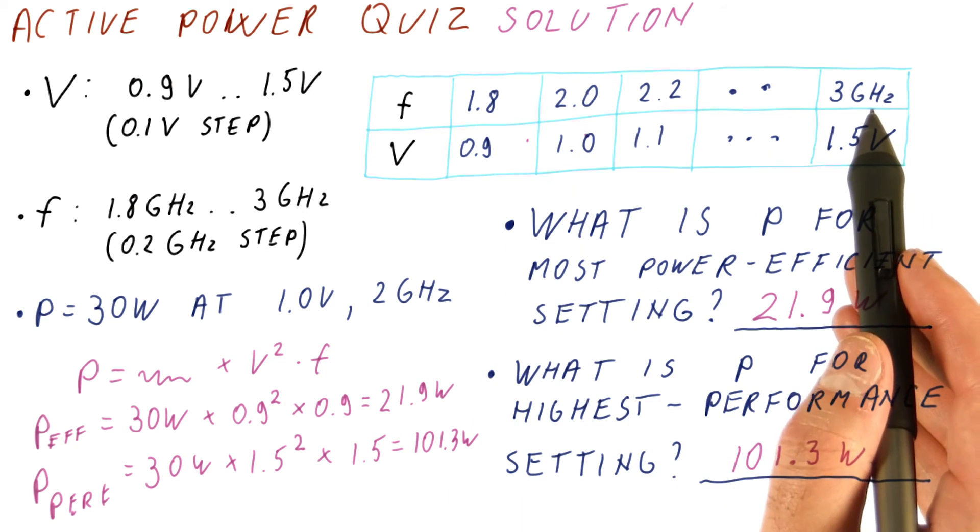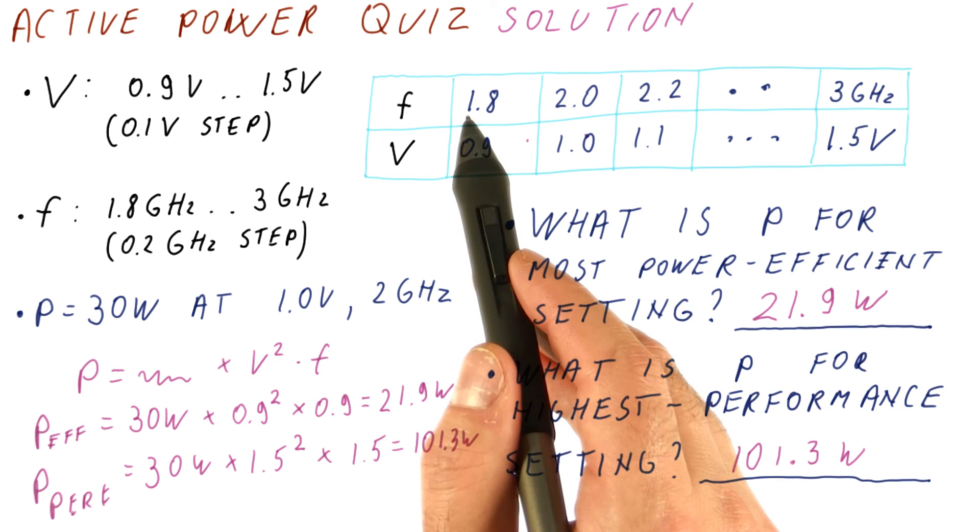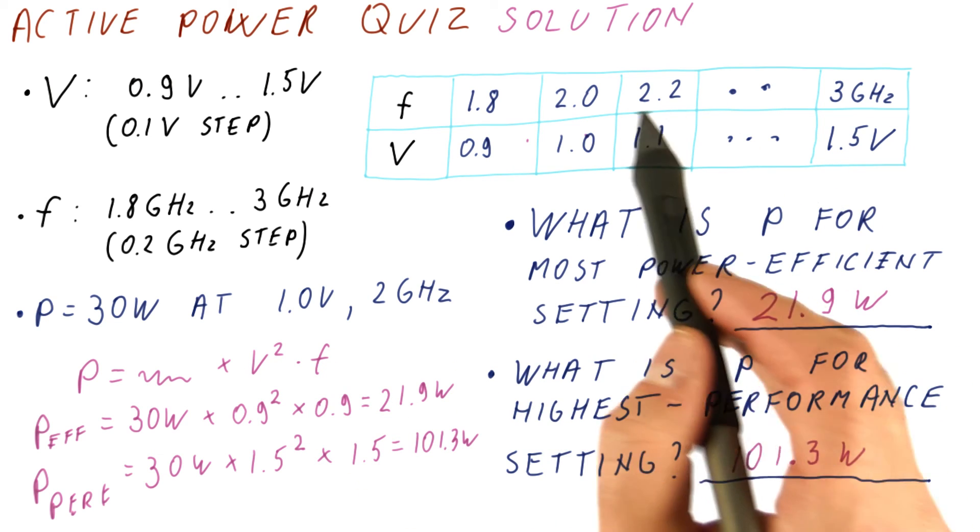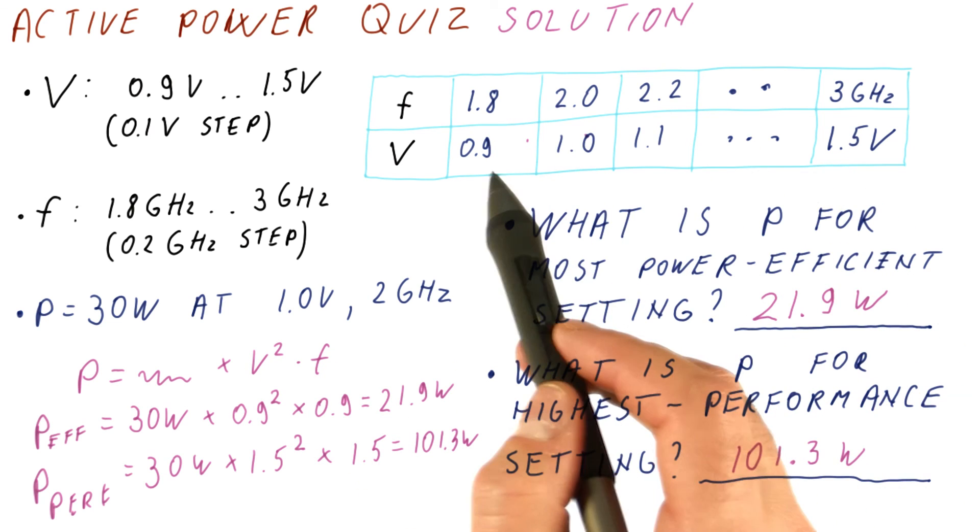Why? Well, because power is not only proportional to frequency. It's also proportional to voltage squared, and reducing the frequency allows us to reduce the voltage.